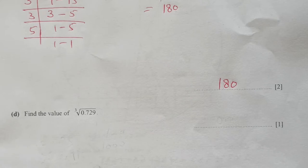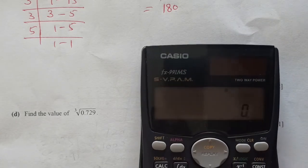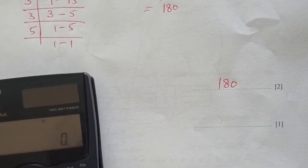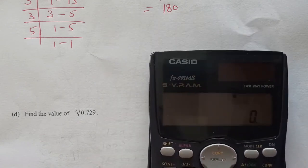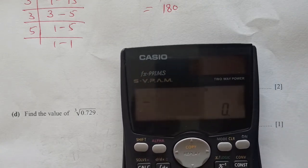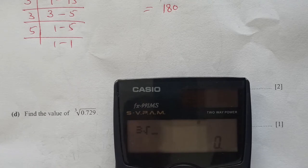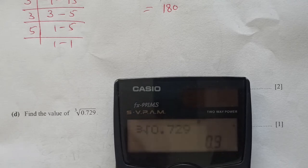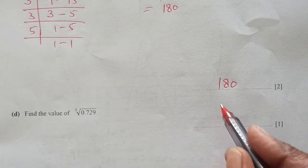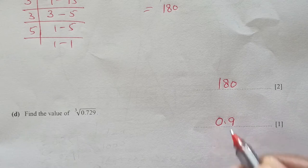Now find the value of the cube root of 0.729. Using a calculator, the cube root of 0.729 is 0.9.